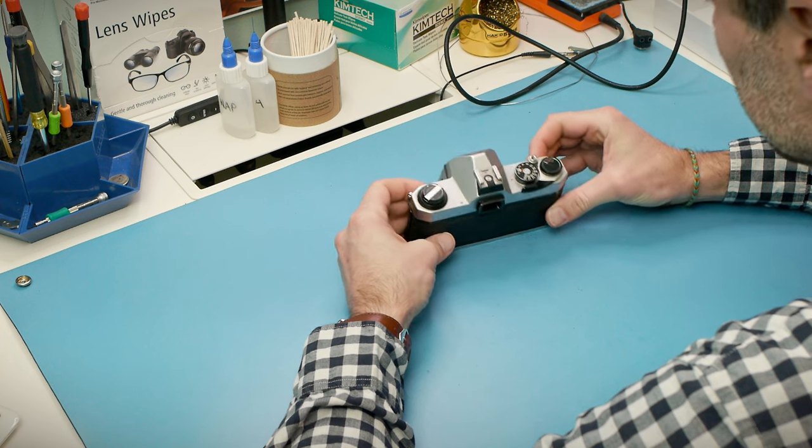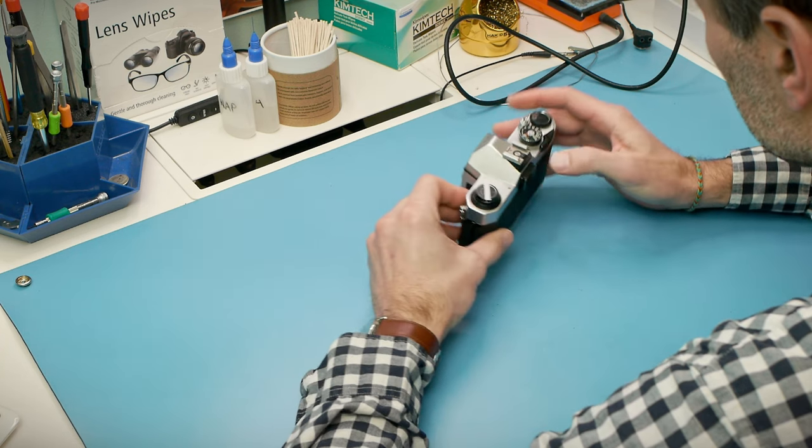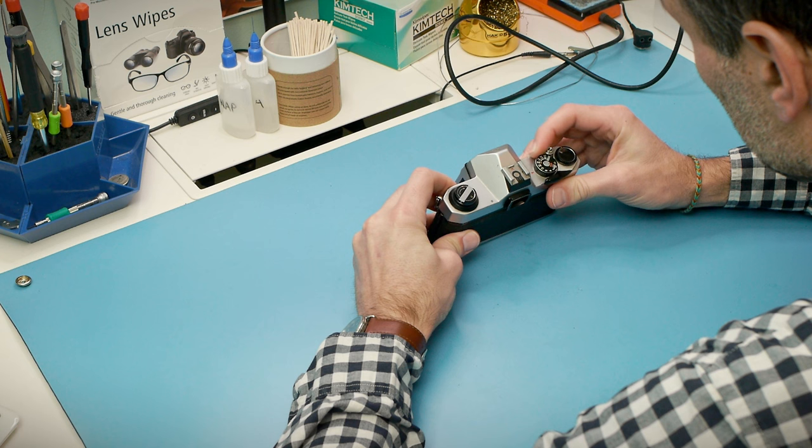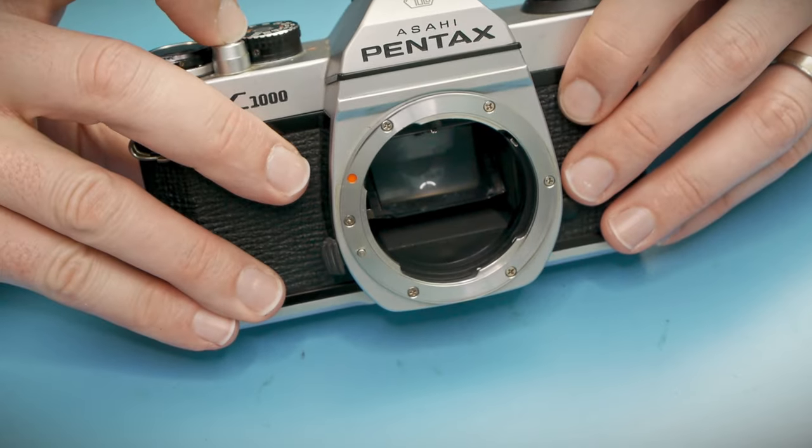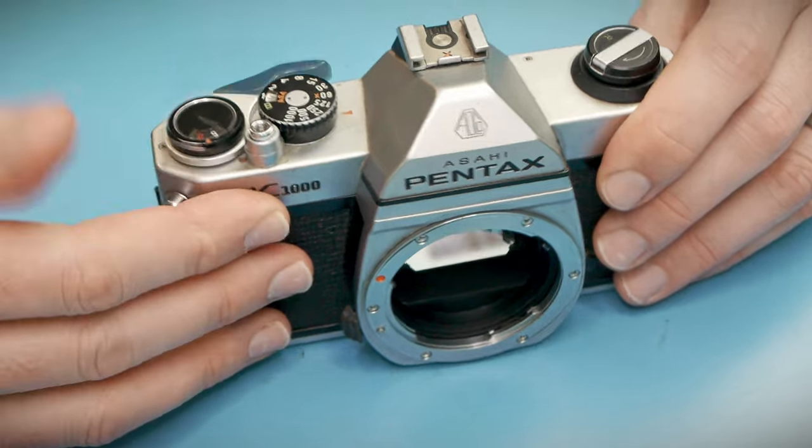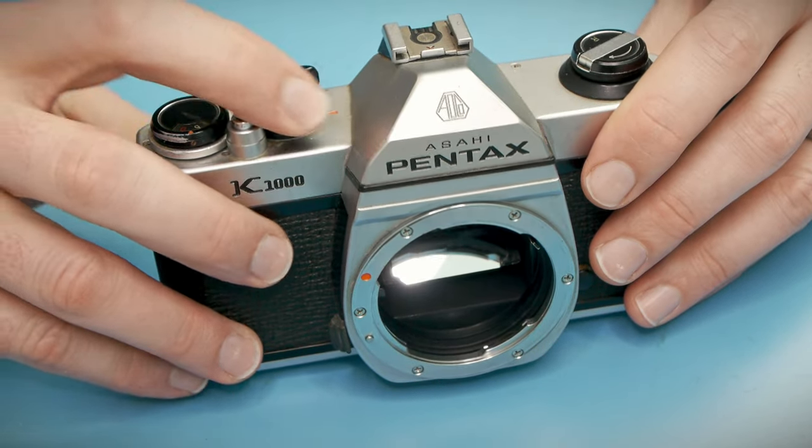At first glance, the camera appears to be basically functional. The shutter fires, the winding mechanism works. I will say that when I first unpacked the camera and started testing it, it felt pretty sluggish. The response of the mirror to the shutter press just felt slow.